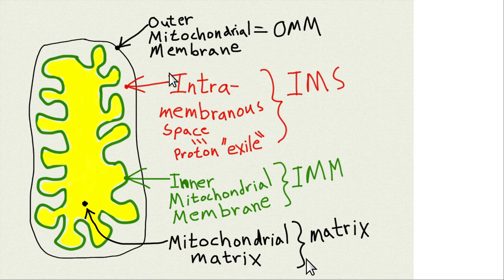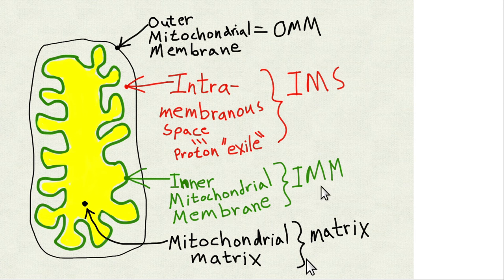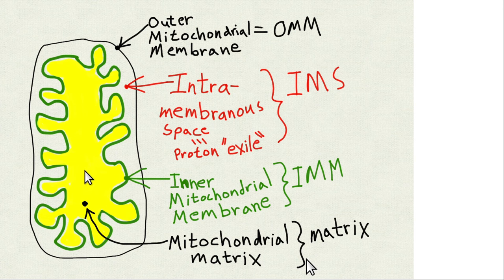Here's the mitochondrial anatomy — the real basics. There's an outer mitochondrial membrane, abbreviated OMM. There's an intramembranous space, abbreviated IMS. The green lining is the intermitochondrial membrane, abbreviated IMM. And in the center is the mitochondrial matrix. The intramembranous space is where protons are pumped; the intermitochondrial membrane is where the electron transport chain occurs; and the mitochondrial matrix is where Krebs cycle runs.